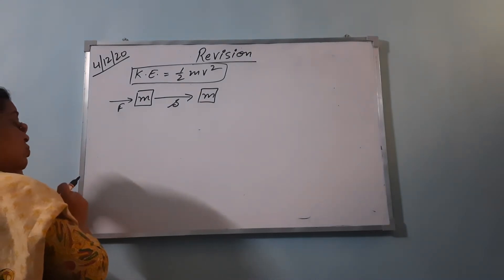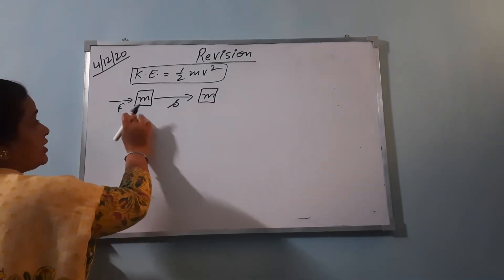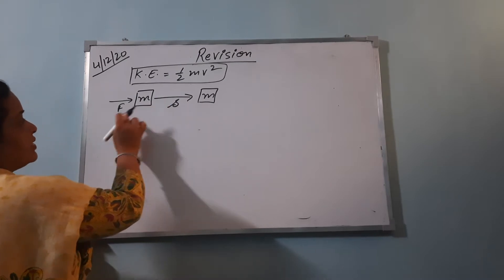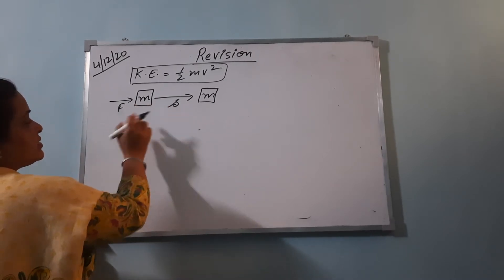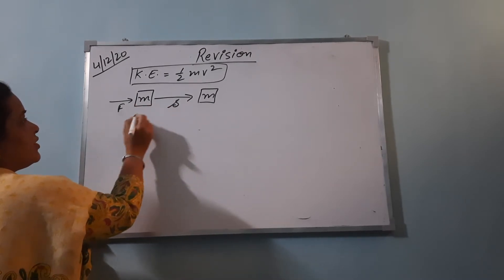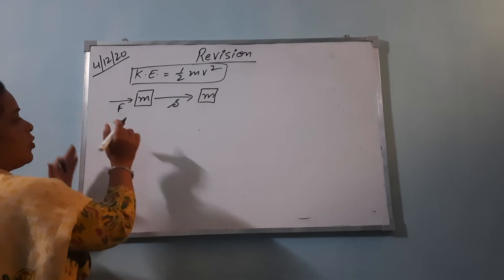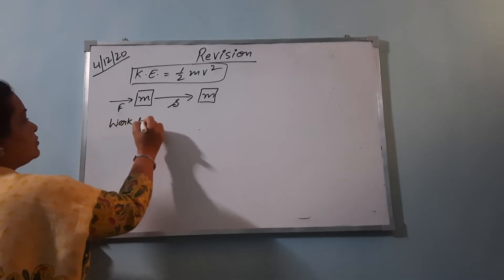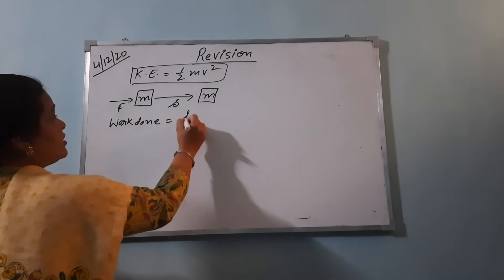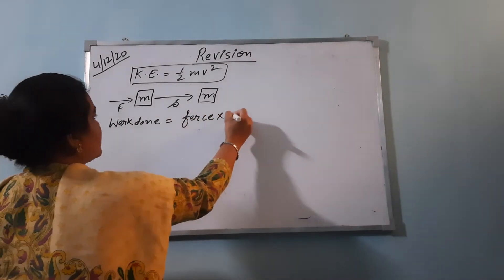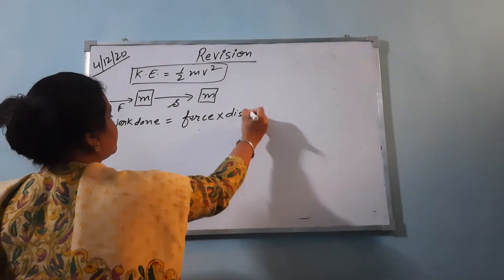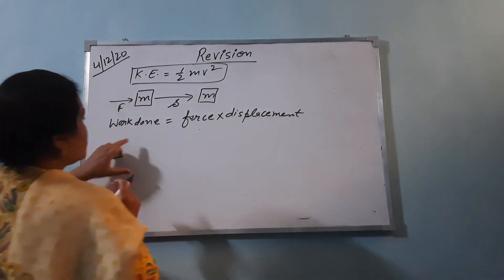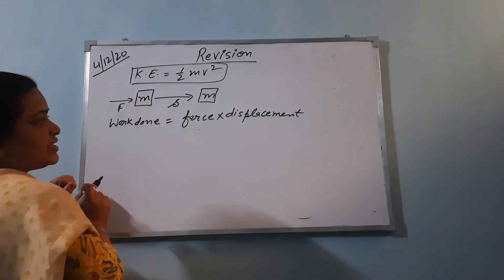So we know that a force is applied and there is a displacement s. So we will say that work is done on the body. Work done is force into displacement, W is equal to F into s. That condition is satisfied here.